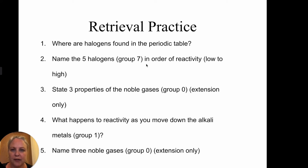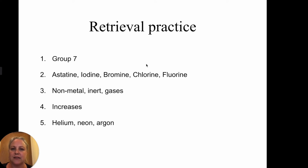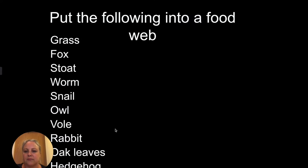Hopefully you had a go — if you didn't, make sure you pause it now and have a go. Here are the answers so you can check against them. Go back and rewind the video if you need to. Now I want you to put the following things into a food web: grass, fox, stoat, worm, snail, owl, vole, rabbit, oak leaves, and hedgehog.